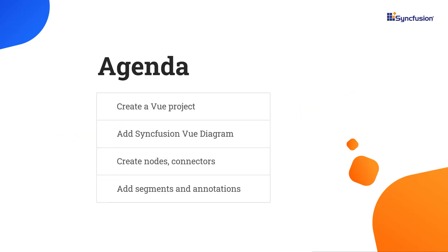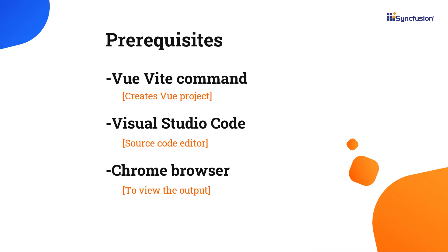In this video, I will show you the steps to create a Vue project and add the SyncFusion Vue diagram to it. I will explain how to create nodes, connectors between nodes, segments, and annotations for the connectors. Let me start with the application creation process. I'm going to create a Vue application using the Vue Vite command. Make sure you have installed the latest version of Vue and Node.js to follow along.